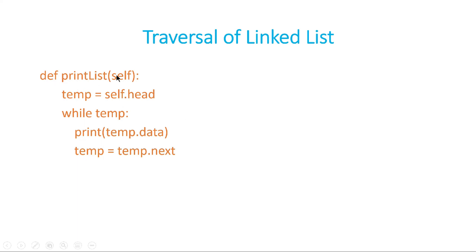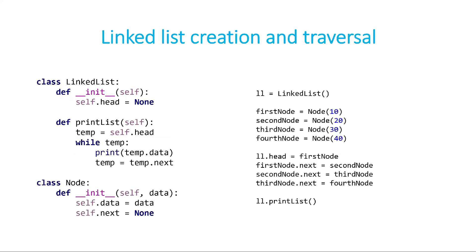Here is the definition of print_list. We take self.head in a temp variable and run a while loop: while temp is not None, we print temp.data, then assign temp = temp.next. That's how we move from one node to the next.